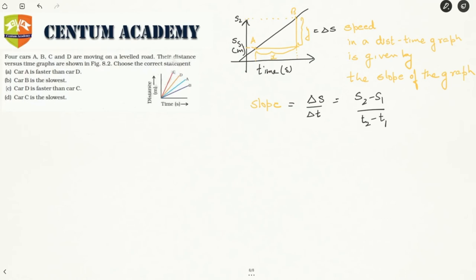This slope is also equal to average speed. In the case of uniform speed motion, average speed equals instantaneous speed throughout the motion, so this represents uniform motion.